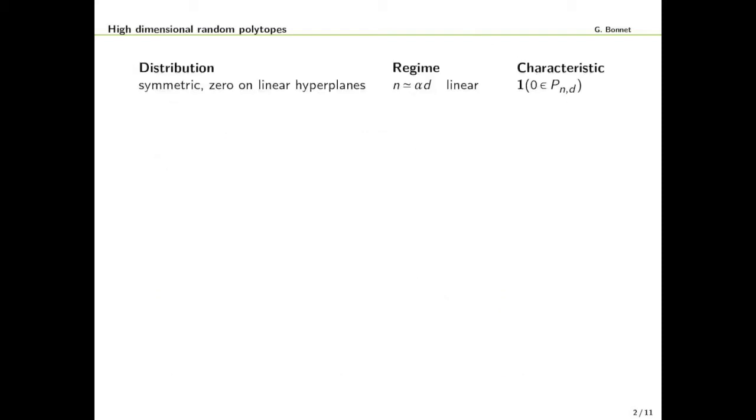As a first concrete example, we consider the setting where the distribution is any symmetric distribution which is zero on linear hyperplanes. This is satisfied if you take a symmetric distribution which has a density with respect to the Lebesgue measure. Then the number of points grows linearly with respect to the dimension and the characteristic we investigate is whether or not the origin is contained in the convex hull.